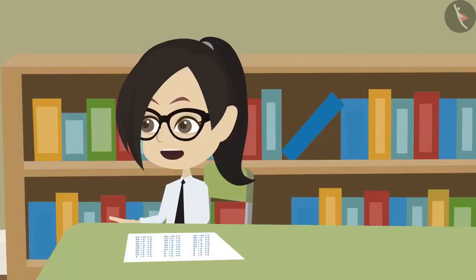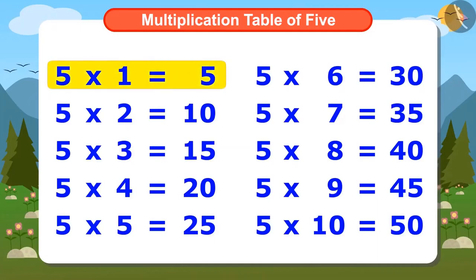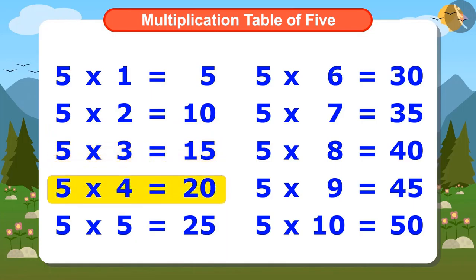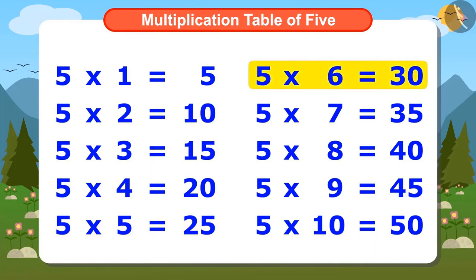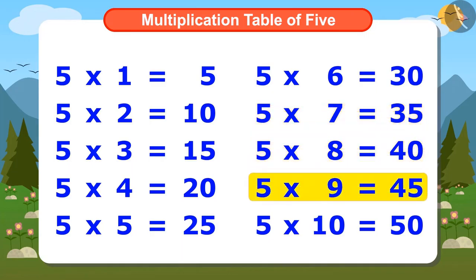Now I will try to memorize the multiplication table of 5 by reciting it. 5 ones are 5, 5 twos are 10, 5 threes are 15, 5 fours are 20, 5 fives are 25, 5 sixes are 30, 5 sevens are 35, 5 eights are 40, 5 nines are 45, 5 tens are 50.